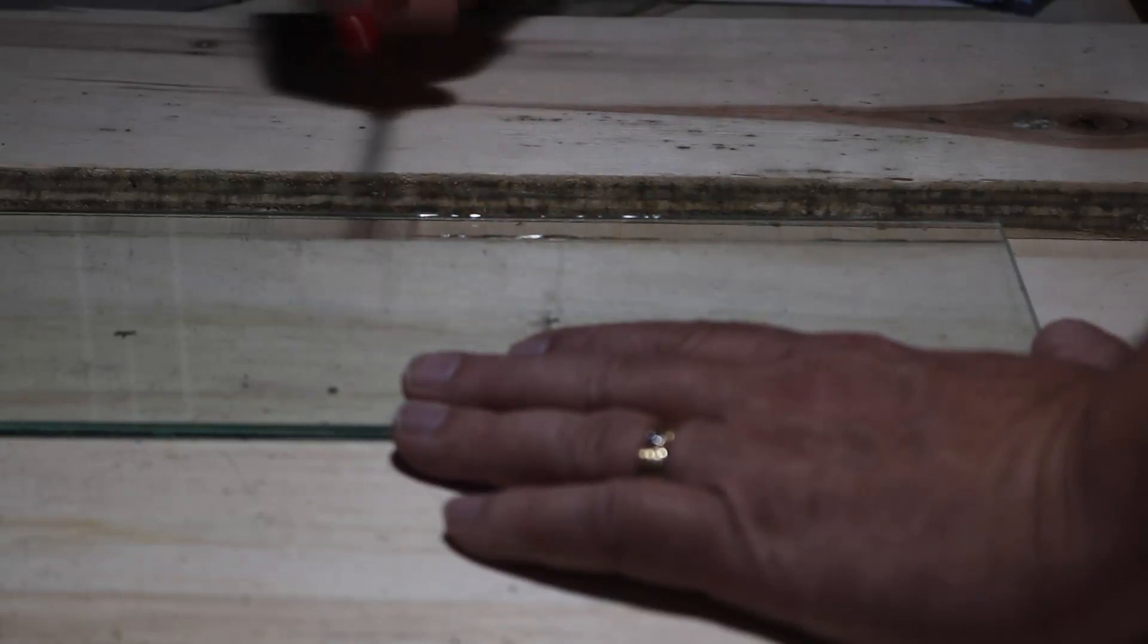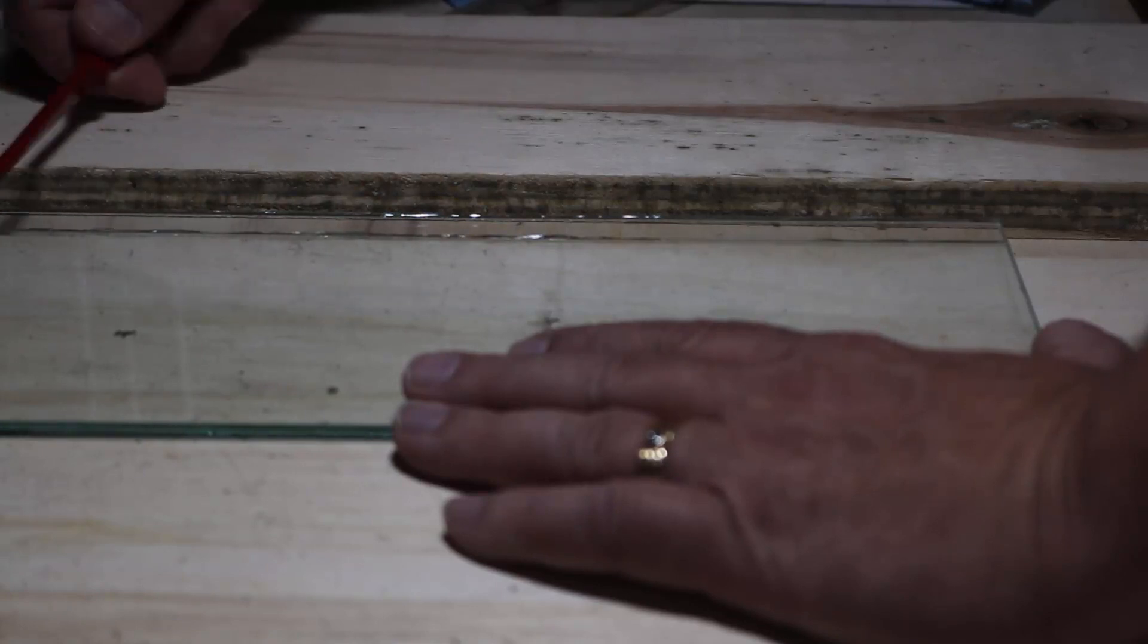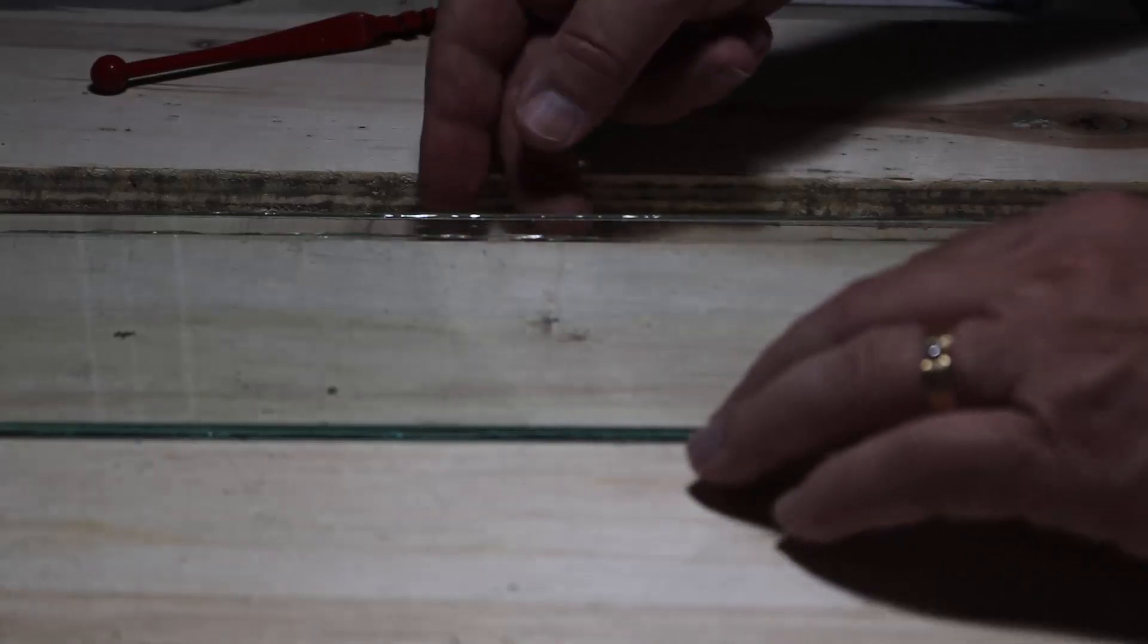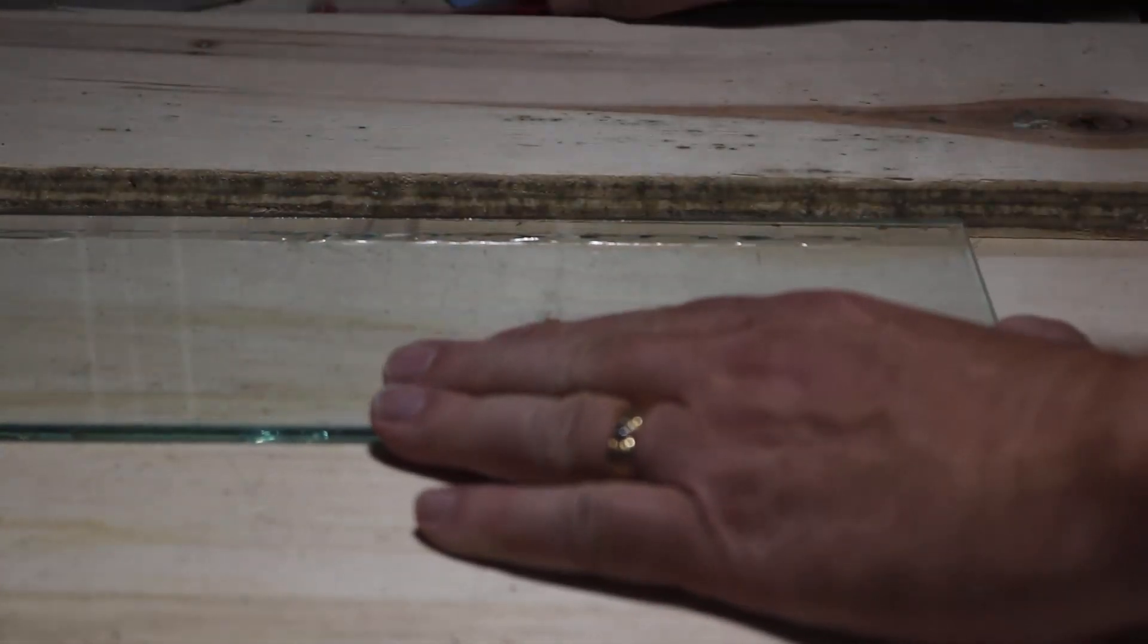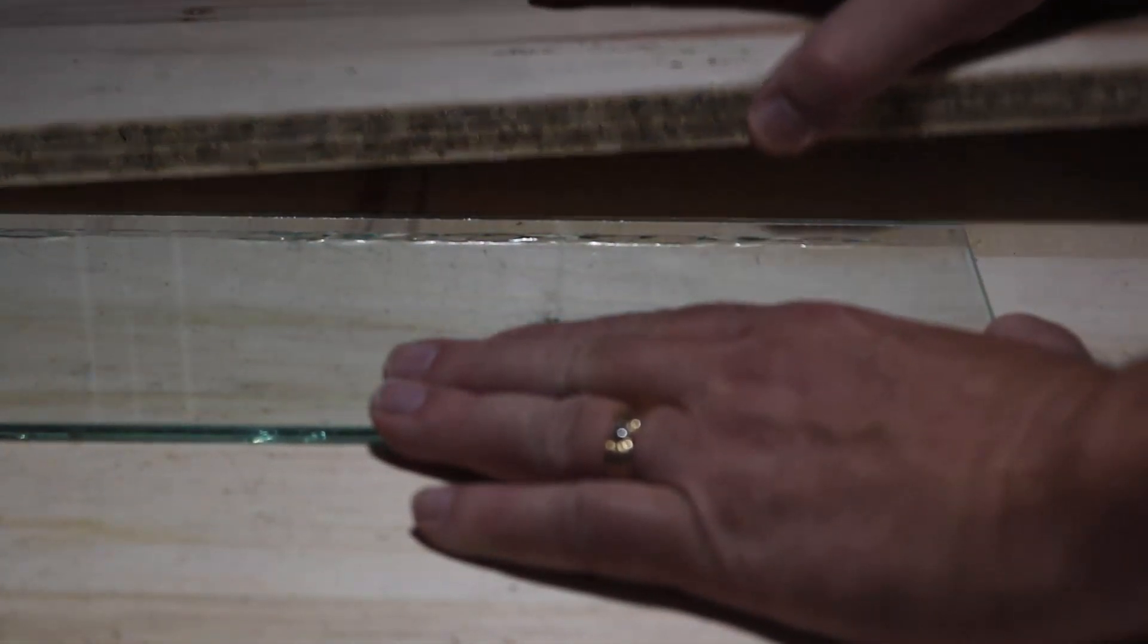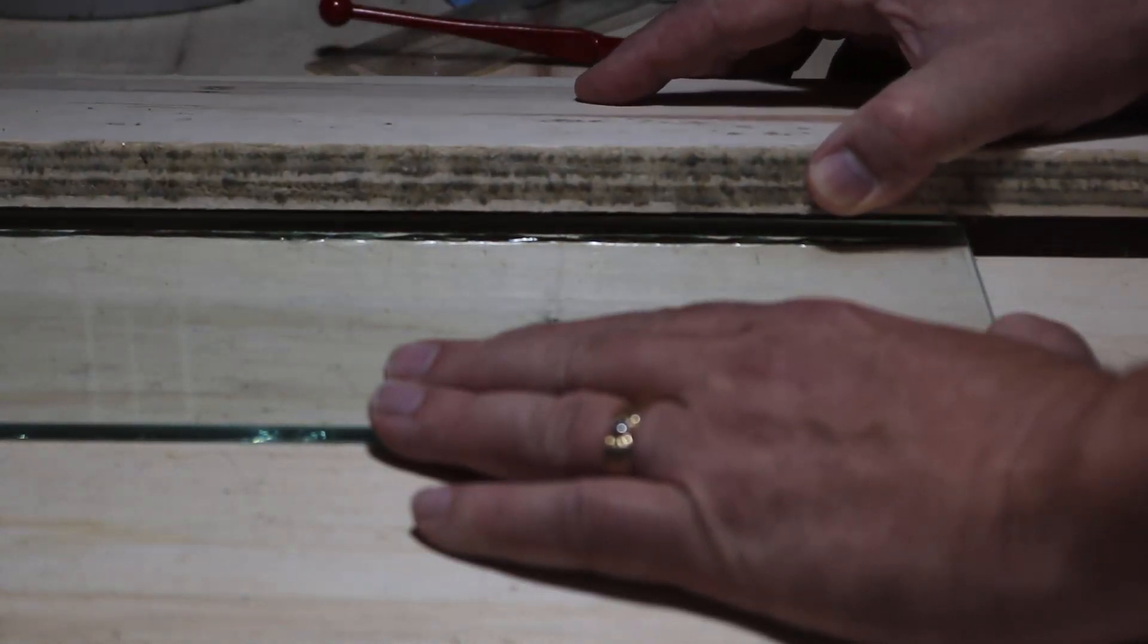And then what you do after that is flip it back over again, and then you're going to apply even pressure again. The important thing here is to apply even pressure to the whole seam all at once. I used to know a glass cutter guy who could just touch the edges and do it, but he had like 40 plus years of experience of cutting glass every day, so I don't think I'm ever going to get to that.